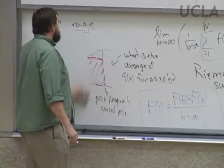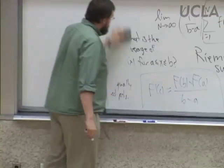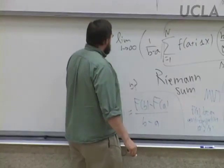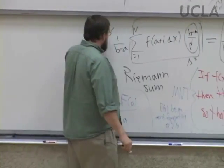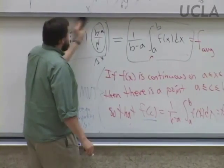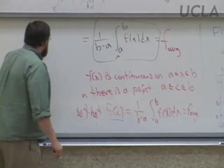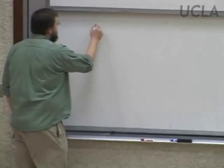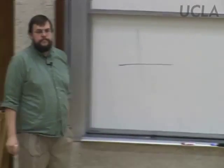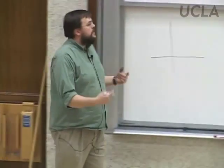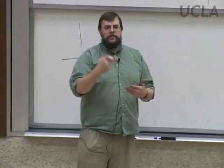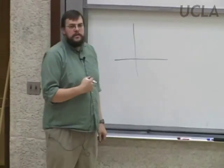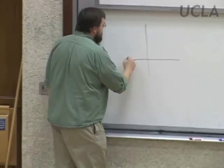Let's start with something easy — let's find the volume of a sphere. The way you make a sphere is you start with a semicircle of radius R — just the top half of the circle. You take it and spin it. After you spin it, you fill in the bottom half and get a sphere.